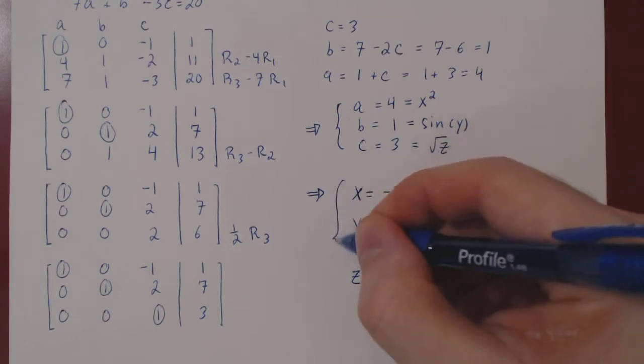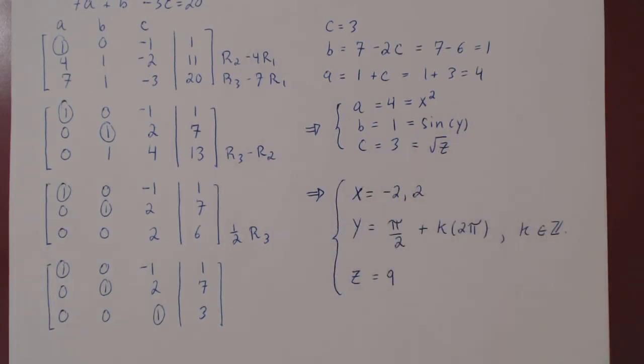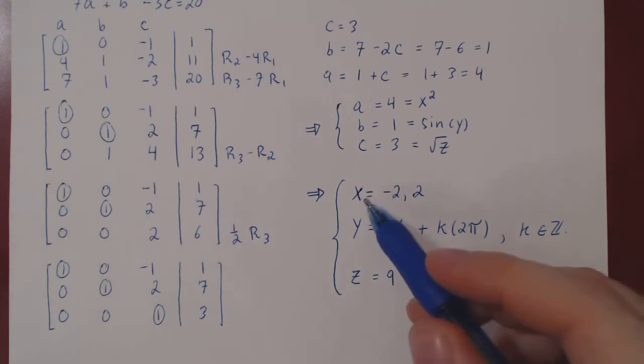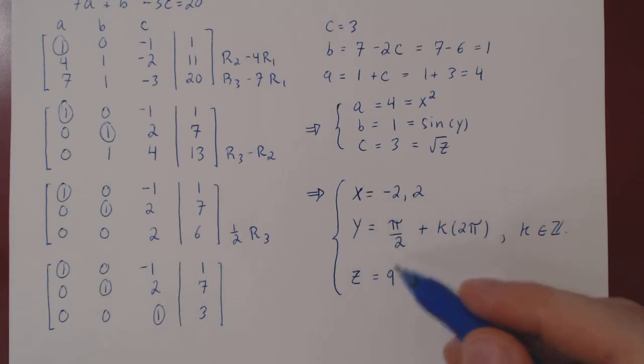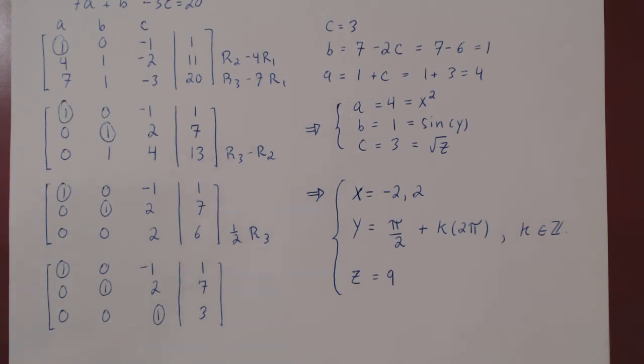And this is now the complete solution set to the original non-linear system. x either equals negative 2 or 2, z must always be 9, and y can be pi over 2 plus any integer multiple of 2 pi. And that's it.